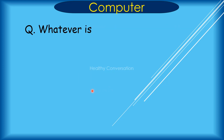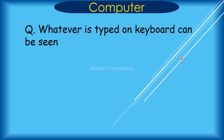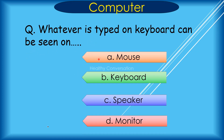Question: Whatever is typed on the keyboard can be seen on dash? A. Mouse, B. Keyboard, C. Speaker, D. Monitor. Correct answer is D. Monitor.